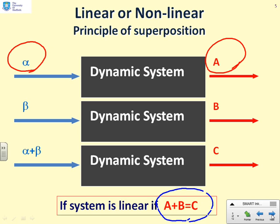In other words, you calculate capital A by just putting in alpha. You calculate capital B by just putting in beta. And you calculate capital C by putting in alpha plus beta. And you want A plus B equals C. If that is true, then your system is linear, superposition holds.